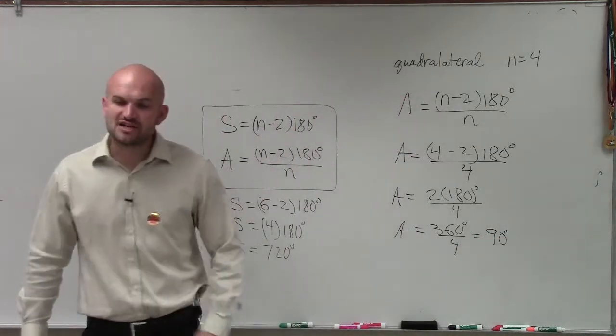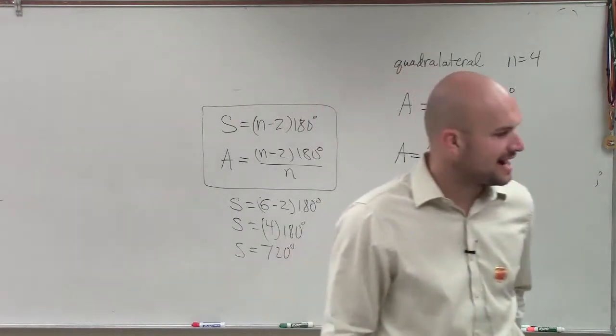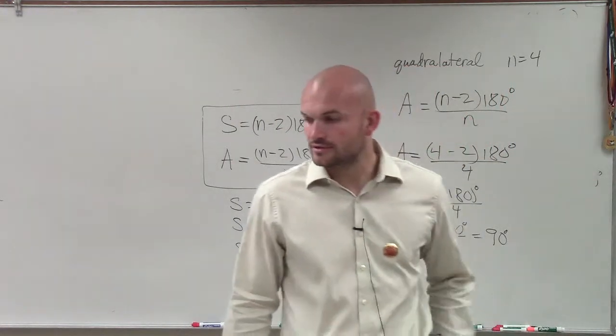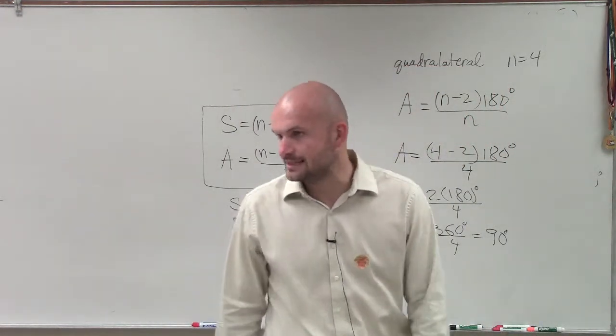So therefore, the measure of each angle of a regular polygon that's a quadrilateral, the measure of that is going to be 90.